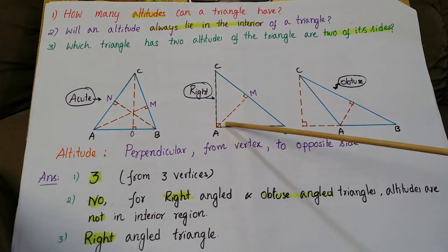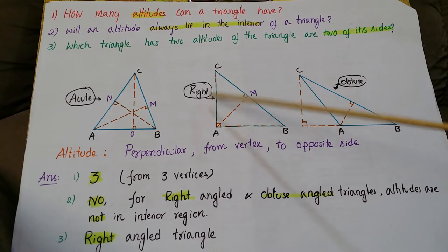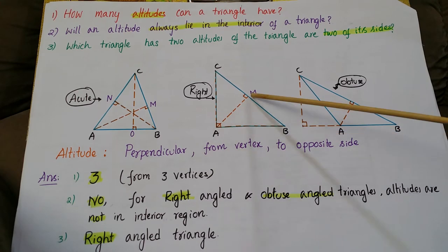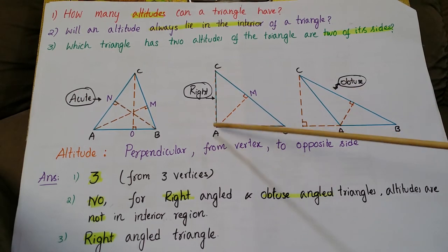See here, this dashed line I have drawn here. These are the altitudes for this right angle triangle. One is in interior and the other two are on its sides.